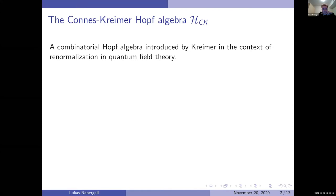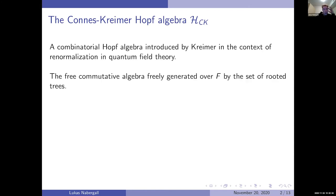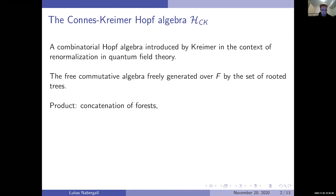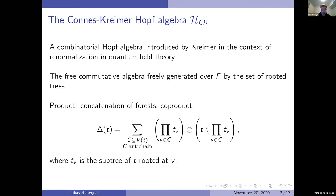I'm sure most people here know the Connes-Kreimer Hopf algebra. It's a combinatorial algebra introduced by Dirk in the context of renormalization. It's a free commutative algebra freely generated over a field F by the set of rooted trees. The product is concatenation of forests and the coproduct looks like this — you're basically splitting a tree.